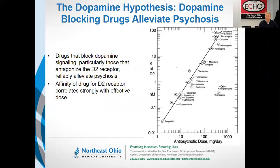Once that piece of knowledge was established, the name of the game became synthesizing drugs that blocked dopamine. In the course of drug evolution, we found an interesting graph showing that the affinity of the drug at the D2 receptor — on the y-axis — tightly correlates with the amount of that drug required to relieve psychosis. Similar figures appear in the classic textbooks of psychiatry.